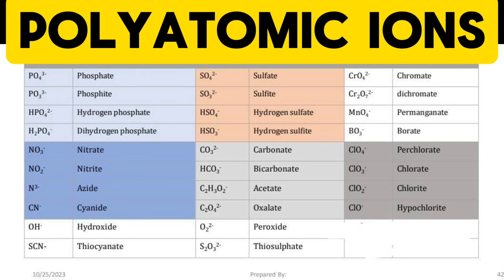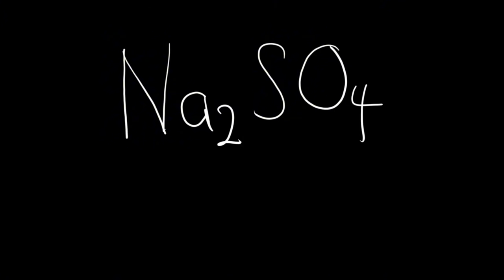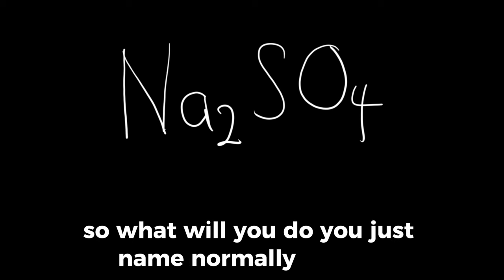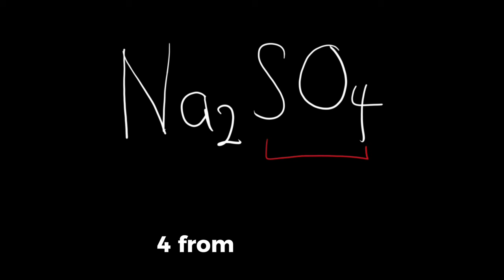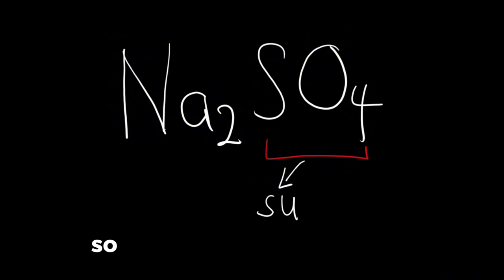If we have, for example, Na2SO4, how can we name this compound? What would you do? You'll just name this SO4 from the table. From the table, SO4 is sulfate, so you'll just write it as it is, exactly from the table: sulfate.